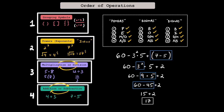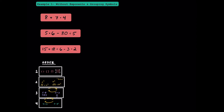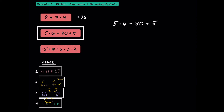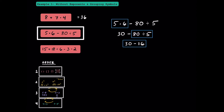Now that you have a better understanding of how the operations work and the order we have to use them, let's go through some examples together. Here in example one, we're going to evaluate some expressions that don't have exponents or grouping symbols yet. For this first one, we have two operations, but multiplication is more important than subtraction. Since 7 times 4 is 28, we're going to write 8 plus 28. With one operation left, we can add 8 plus 28 to get 36. For the next one, there are three operations, but multiplication and division are more important than subtraction. Since multiplication comes earlier in the problem, it gets to go first. 5 times 6 is 30, so we're going to write 30 minus 80 divided by 5. Between subtraction and division, division is more important. 80 divided by 5 is 16, so we'll write 30 minus 16, and that's going to be 14.